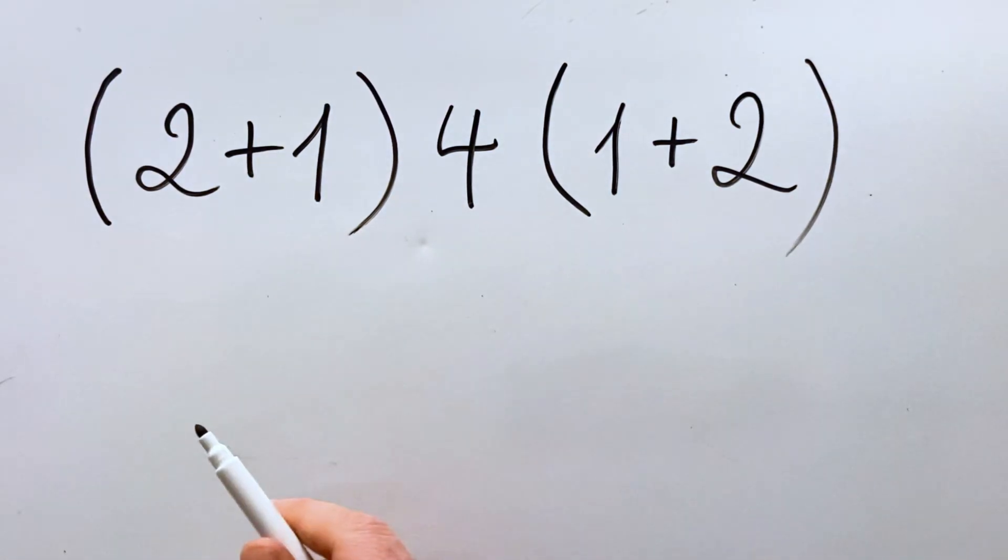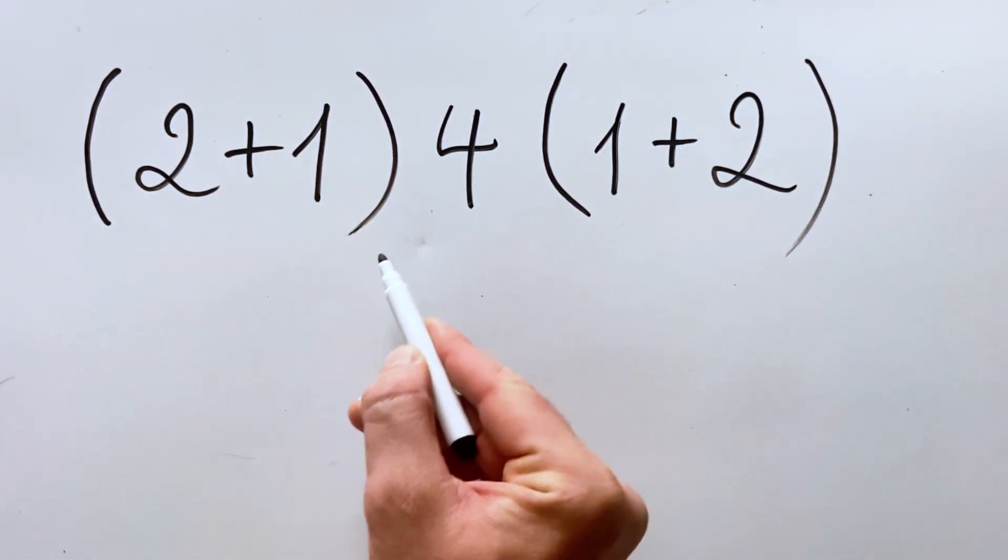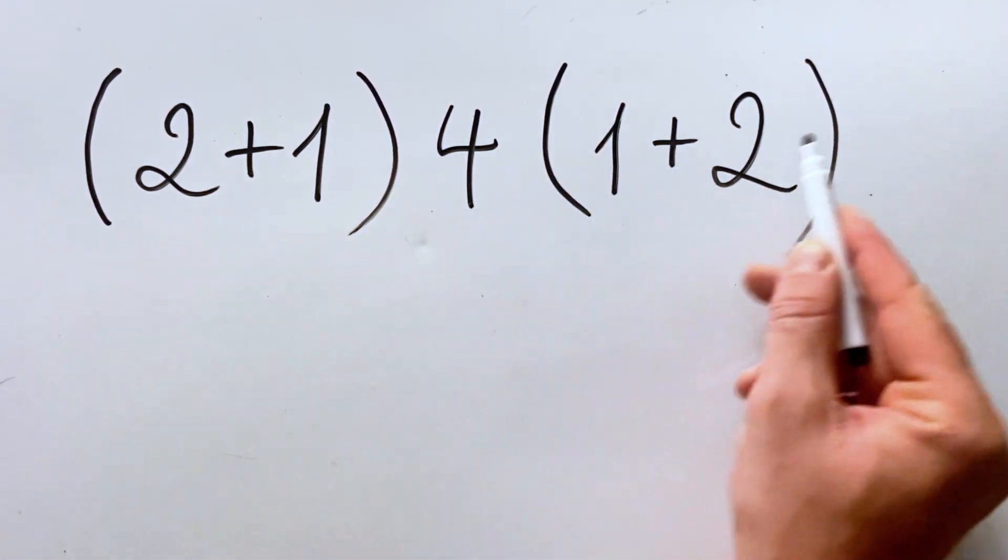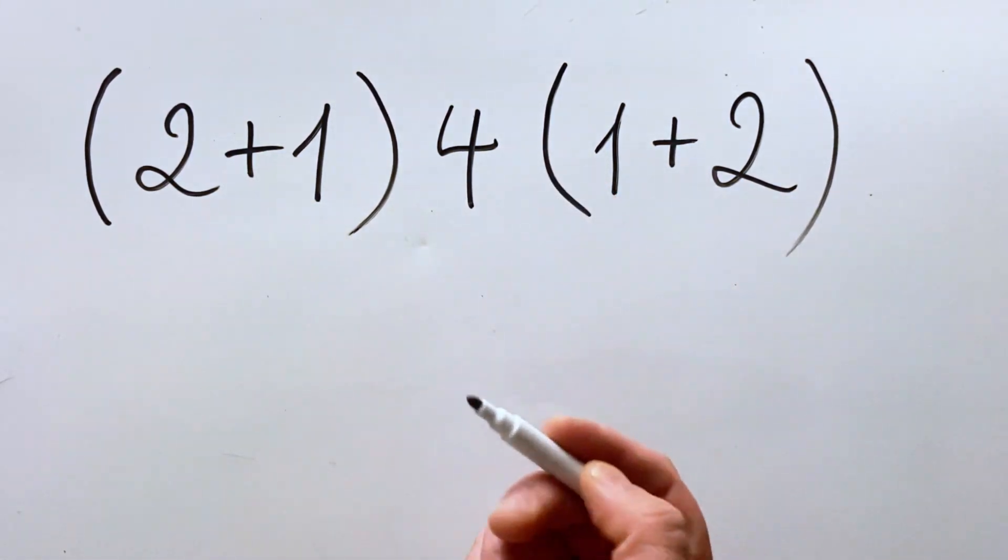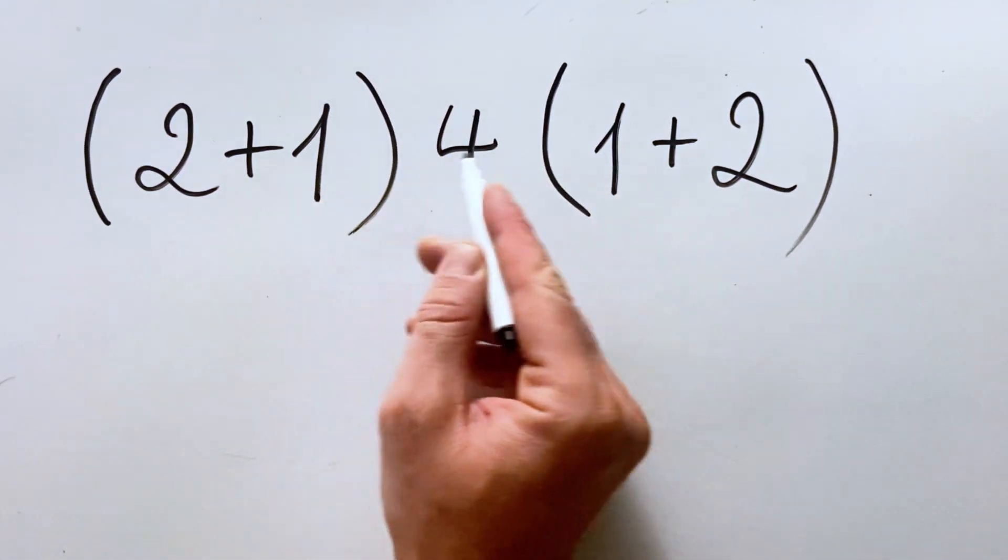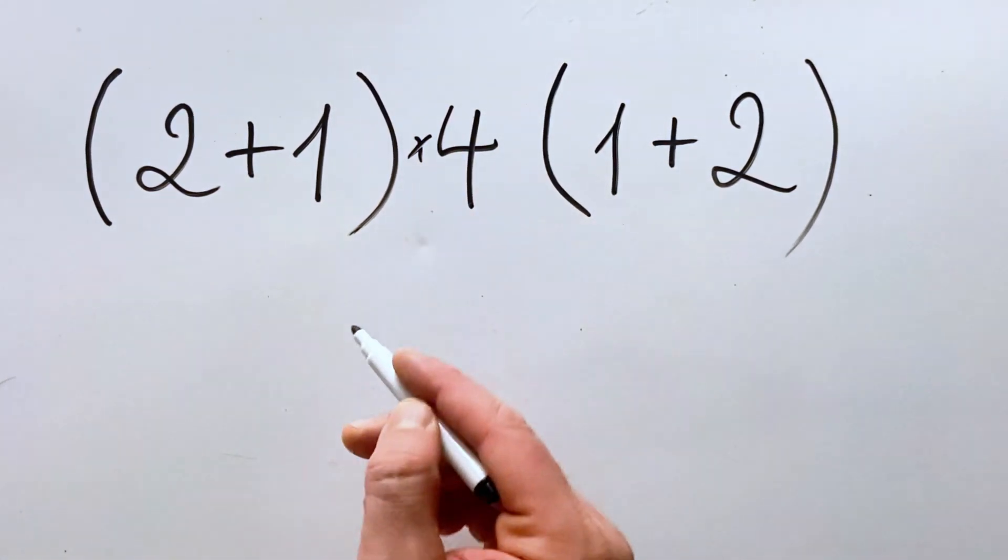But here is the catch. When we have a parenthesis next to a number or a number next to a parenthesis, we can write without having the multiplication symbol. So when we have a parenthesis next to a number, this basically means multiply.